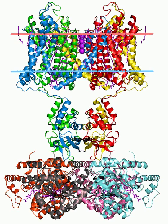It may seem counterintuitive that a channel should allow potassium ions but not the smaller sodium ions through. However, in an aqueous environment, potassium and sodium cations are solvated by water molecules. When moving through the selectivity filter, the water-K+ interactions are replaced by interactions between K+ and carbonyl groups of the channel protein. The diameter of the selectivity filter is ideal for the potassium cation but too big for the smaller sodium cation. Hence, the same carbonyl groups are too far apart to adequately solvate sodium, and passage of potassium cations through the selectivity filter is strongly favored.